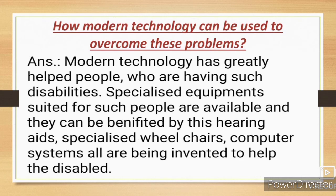How can modern technology be used to overcome these problems? Modern technology has greatly helped people who are having such disabilities. Specialized equipment suited for such people is available, and they can be benefited by these — hearing aids, specialized wheels, computer systems — all are being invented to help the disabled.